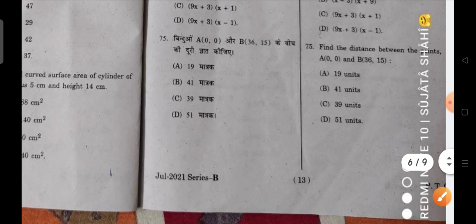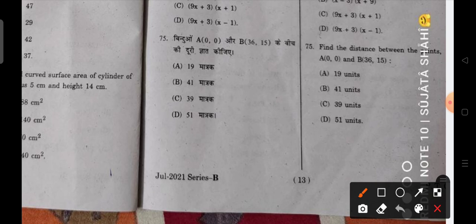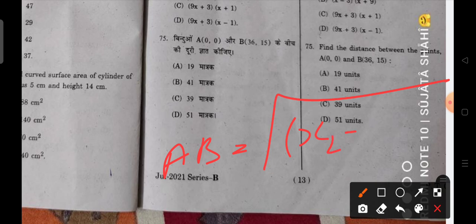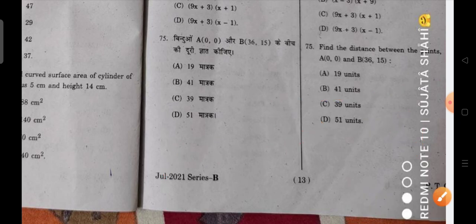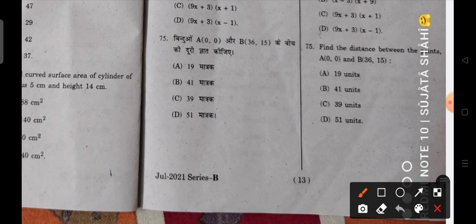Next, find the distance between the two points A and B. You will find the distance by the formula, that is AB equals under root x2 minus x1 square plus y2 minus y1 square. When you solve it, the answer is 39 units.